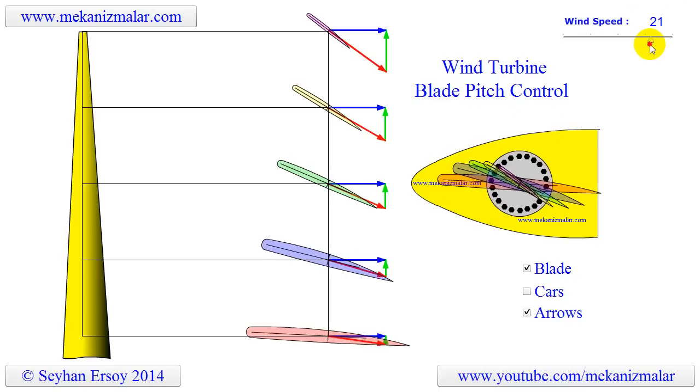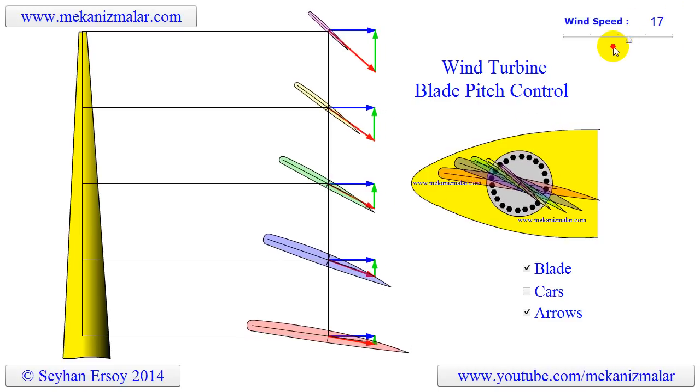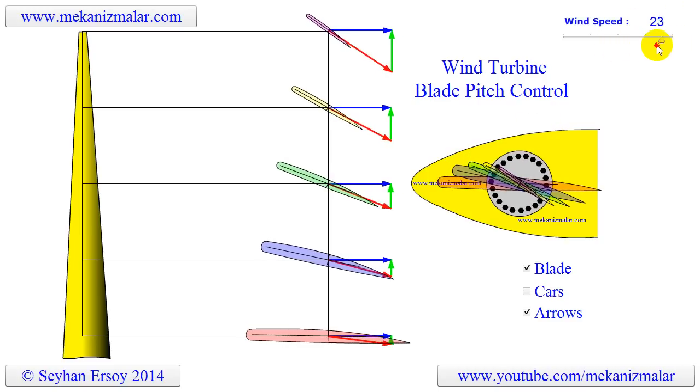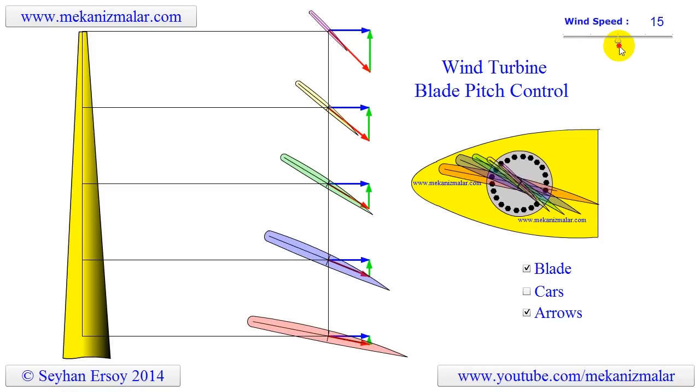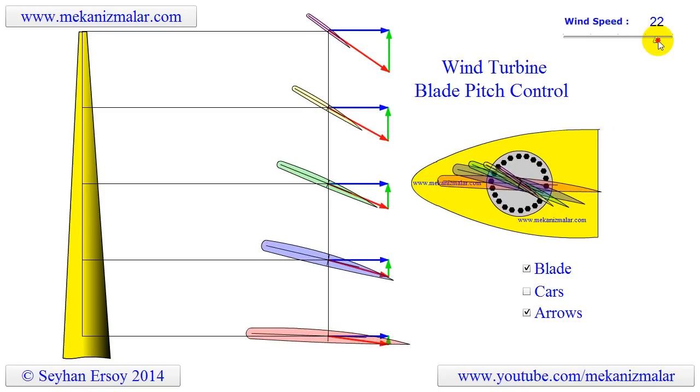Engineers design the blade profile at one specific wind speed, say 15 meters per second. Then they assume that the middle point of this blade should always work at optimum condition at that point. In operation, rather than morphing the blade shape, the pitch control allows very close approximation to this desired shape.